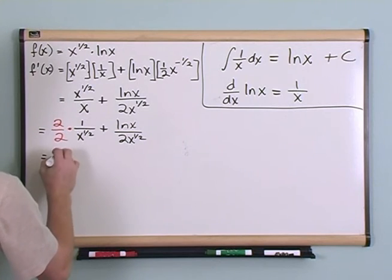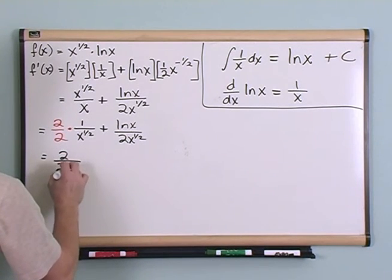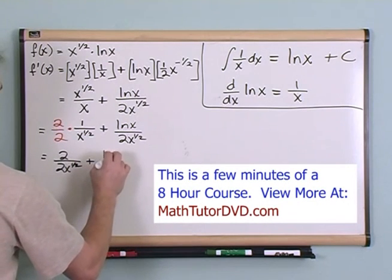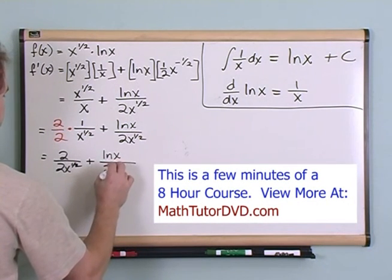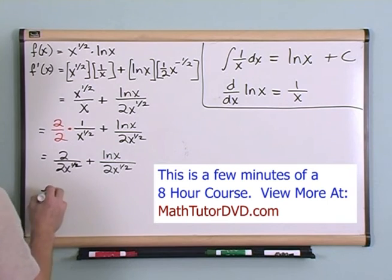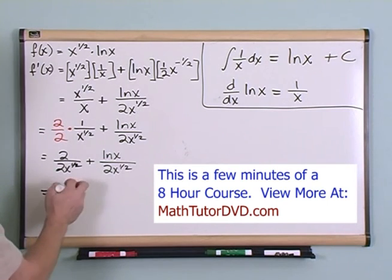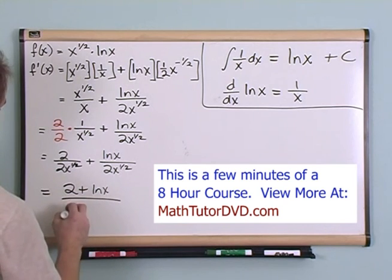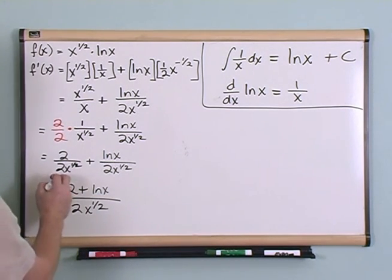So what you would get is 2 over 2 times x to the one-half plus natural log of x over 2x to the one-half. Now I have a common denominator, and then I can just write 2 plus natural log of x over 2 times x to the one-half. And then that would be my answer.